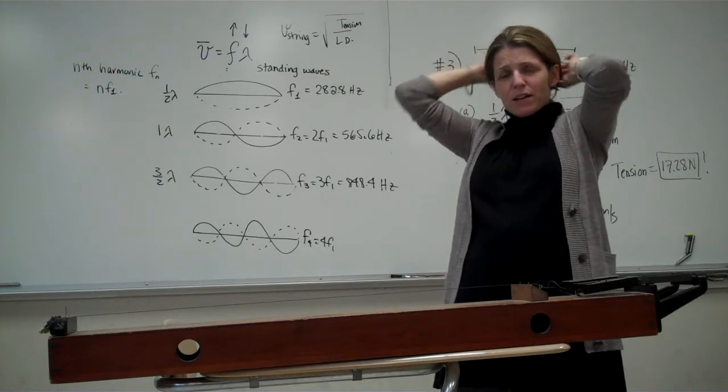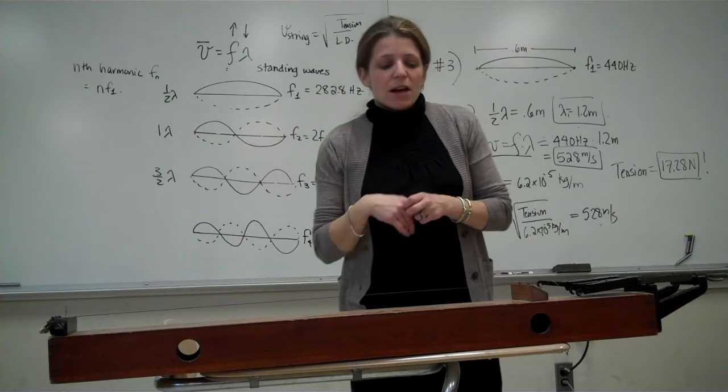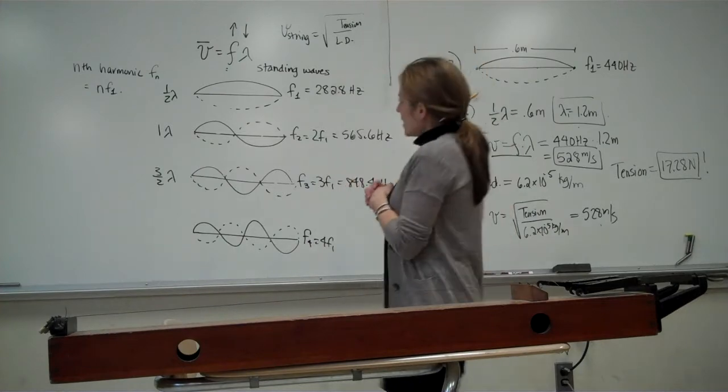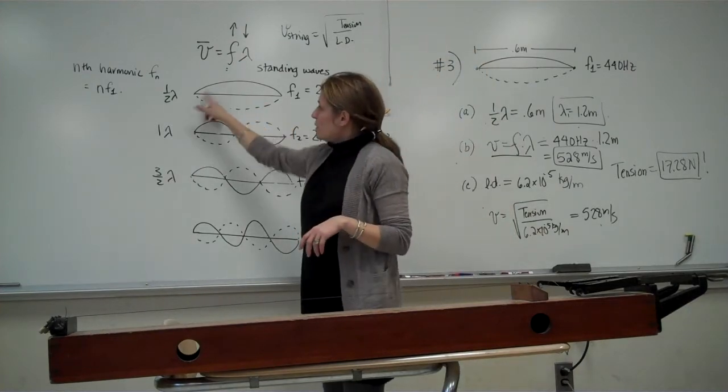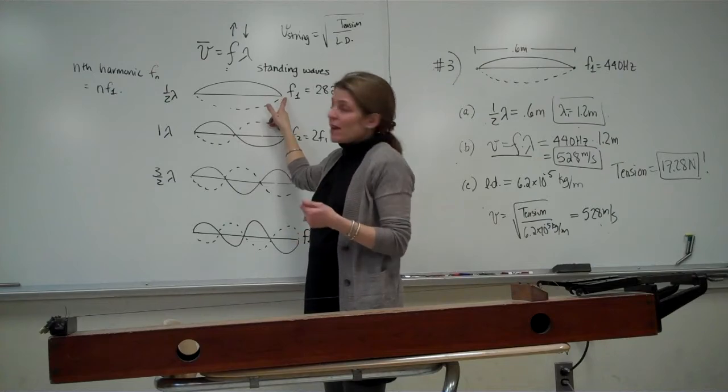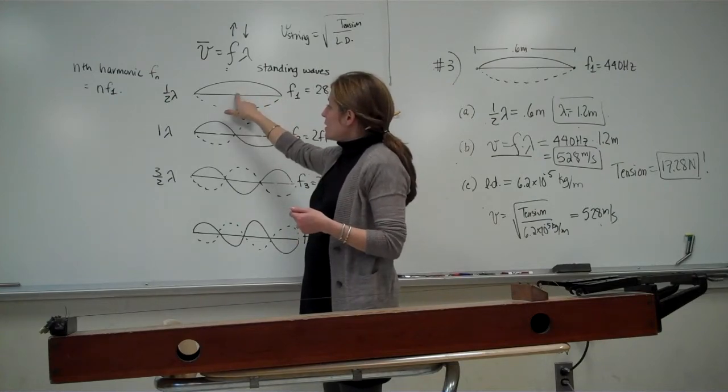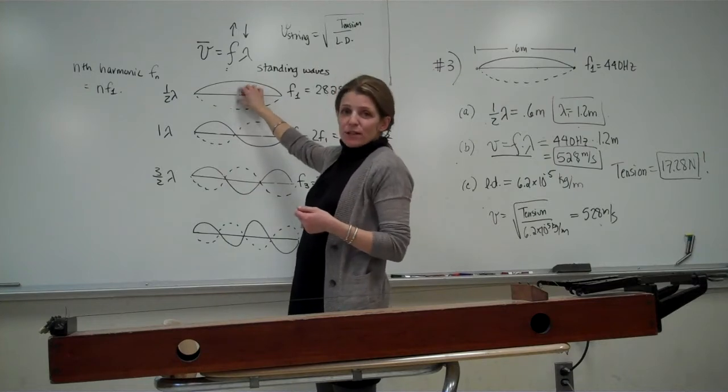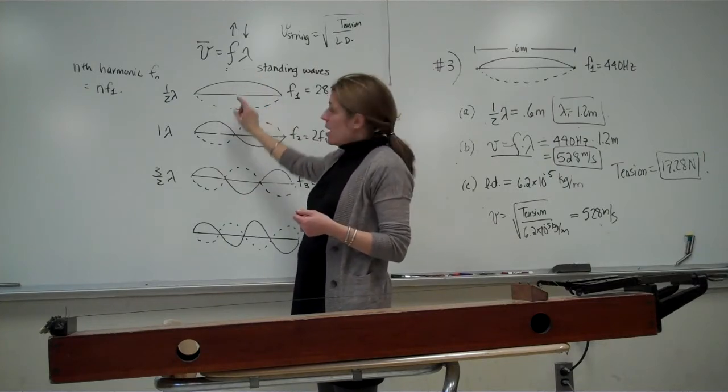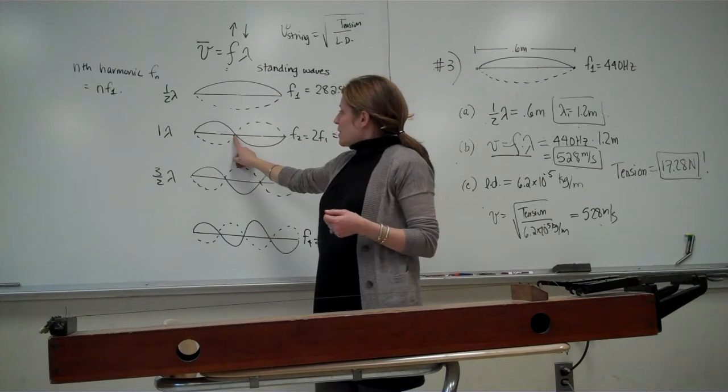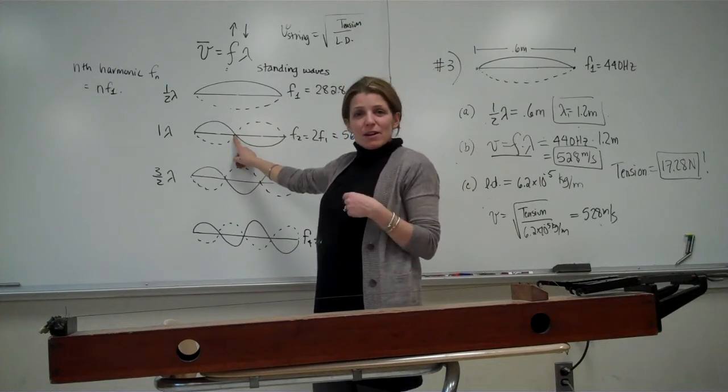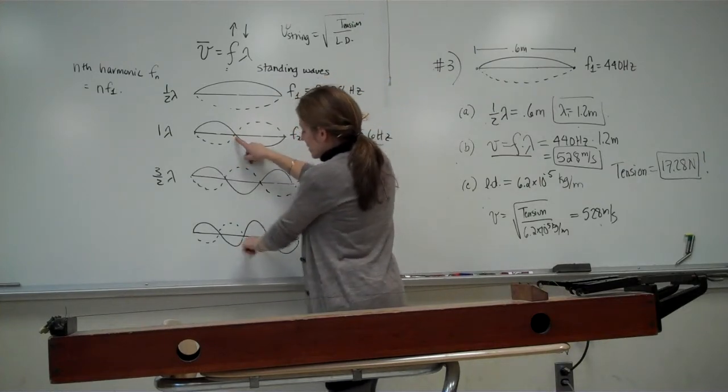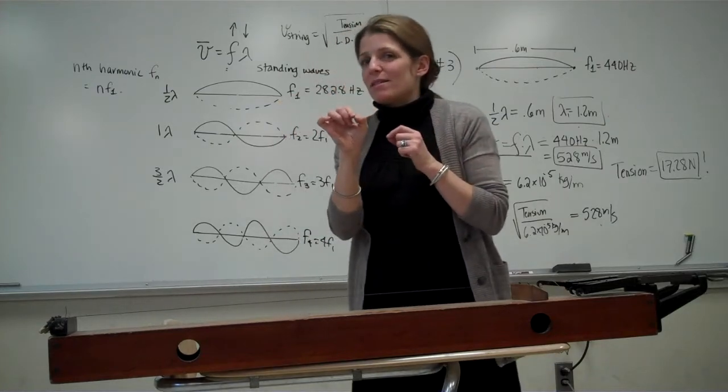So the reason I want you to understand that is because there's certain properties. For example, the fundamental vibration only has nodes at the end. If you were to touch this in the middle, you're clamping the string at the middle. That's not part of the boundary conditions. You'd stop this vibration. But if you were to touch it at the middle, that actually wouldn't affect the second harmonic or the fourth harmonic because it has a node at the middle, so it's actually not vibrating at that moment.